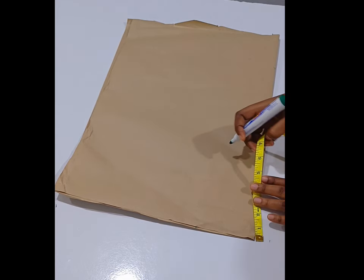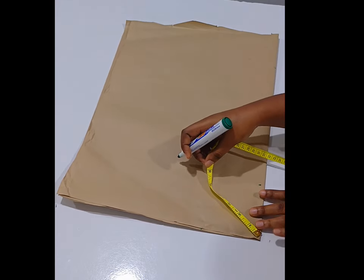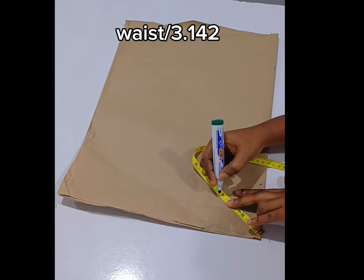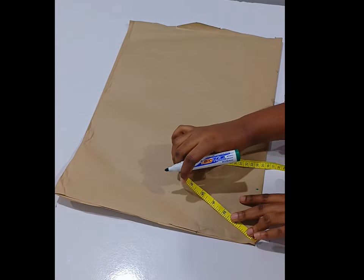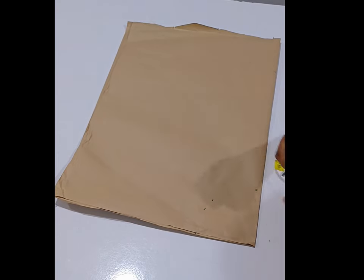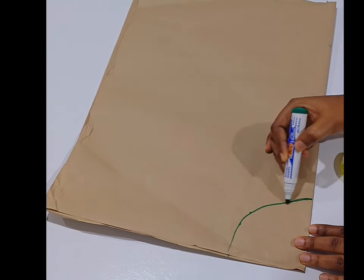So I'm going to be making an arc that is four inches all around. To make an arc, that is the waist measurement divided by 3.142.